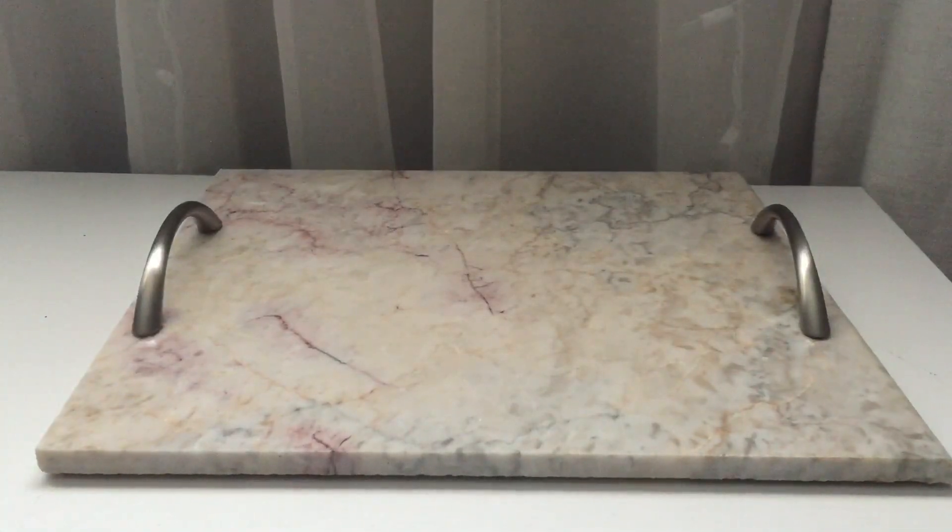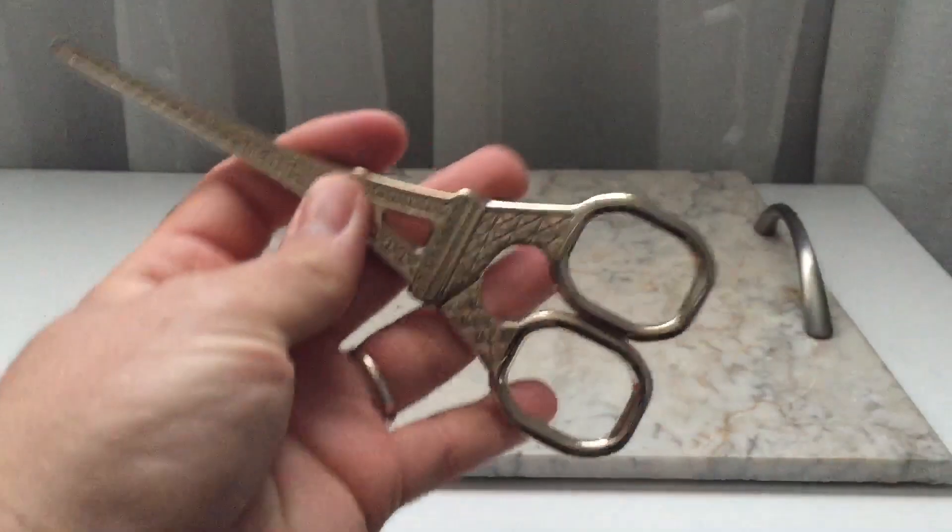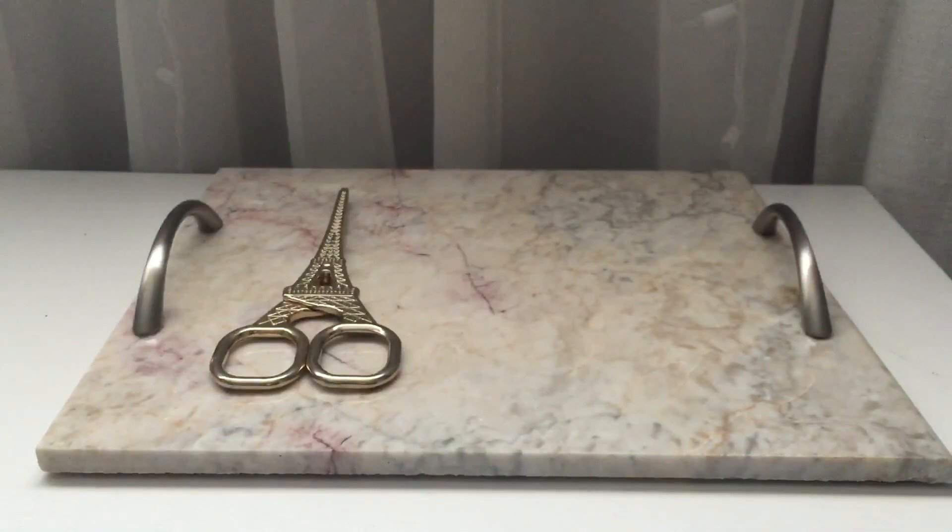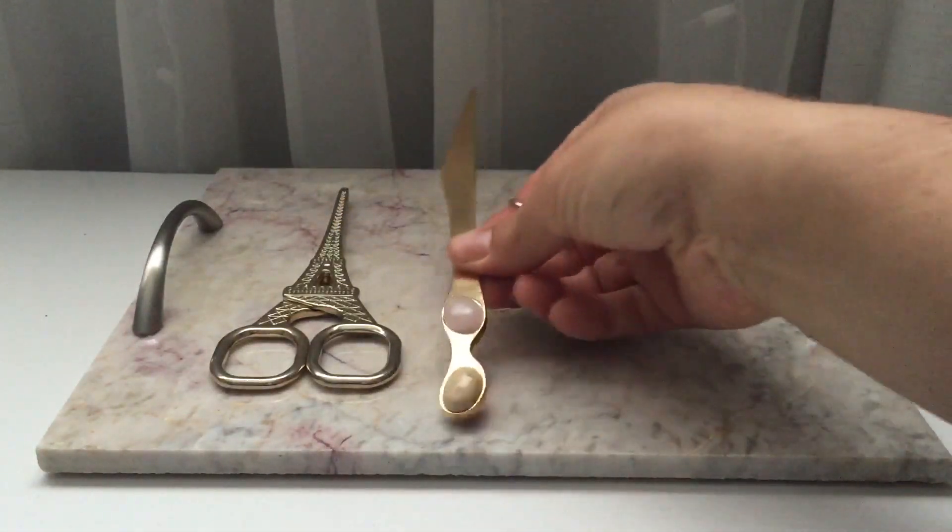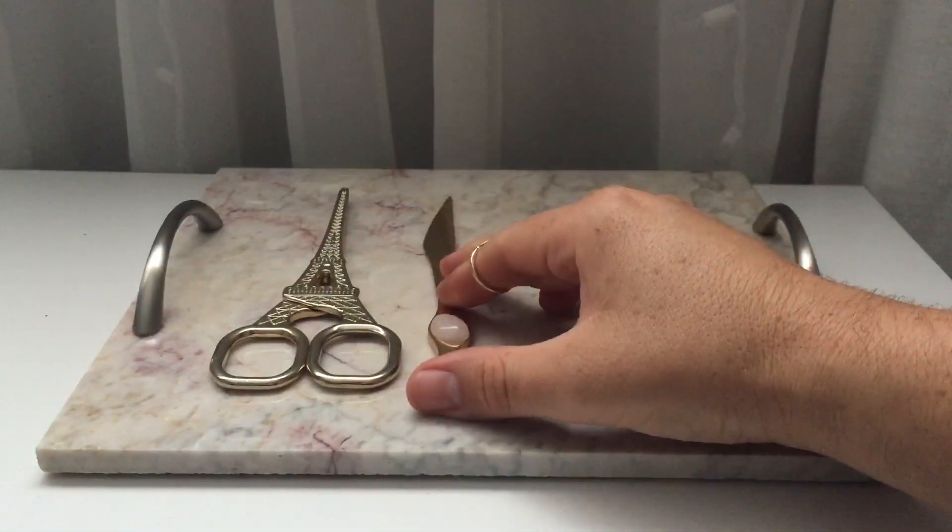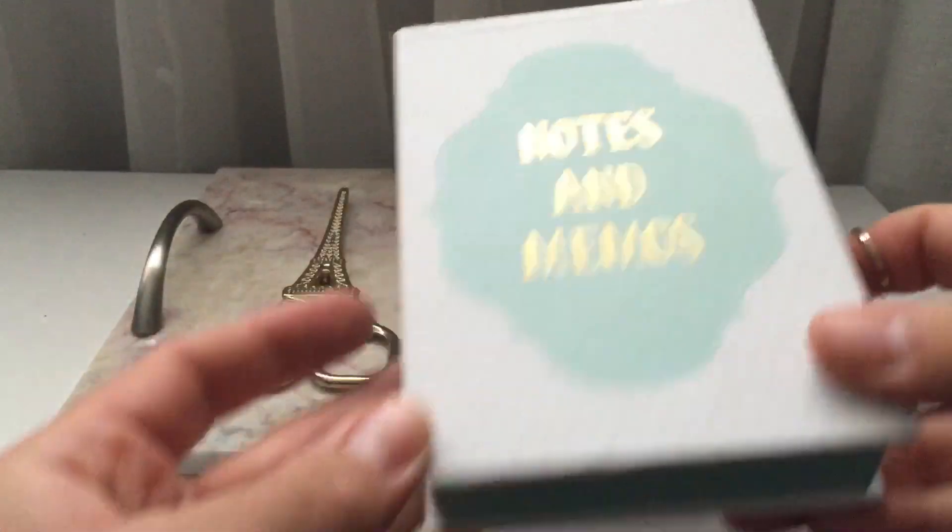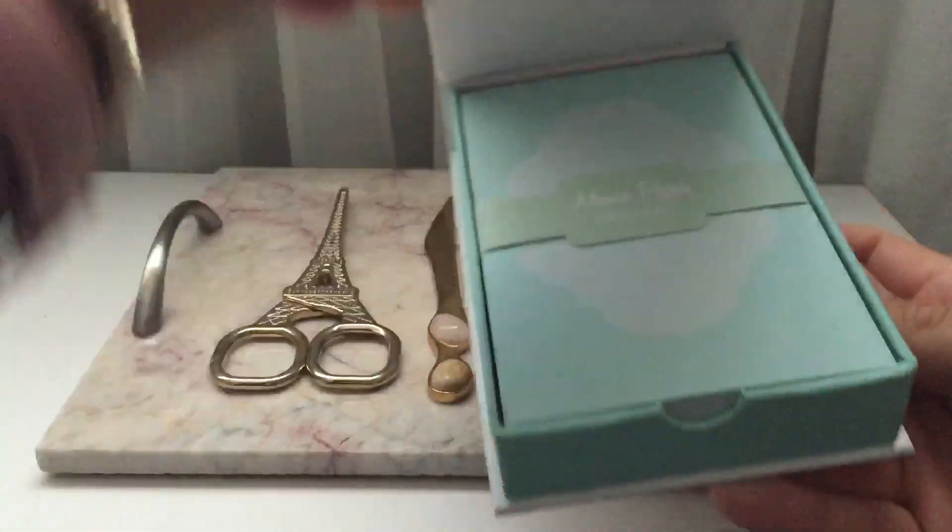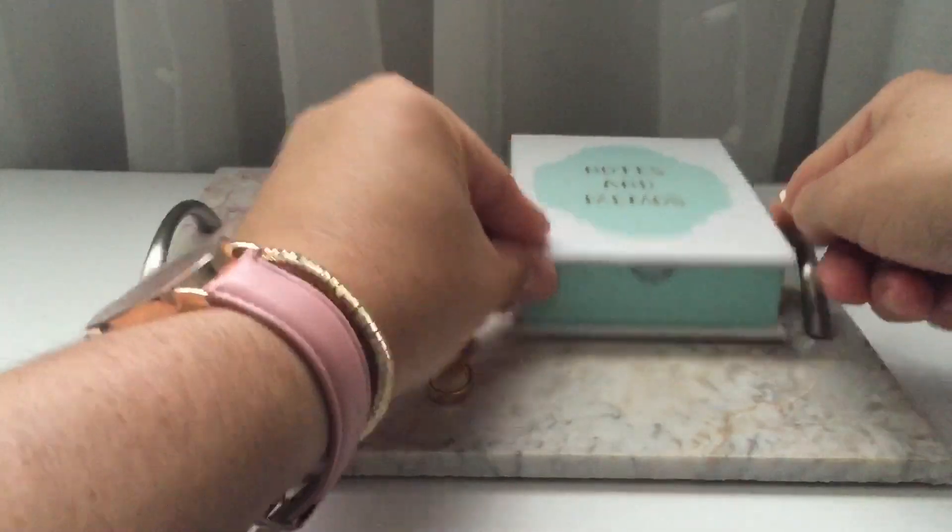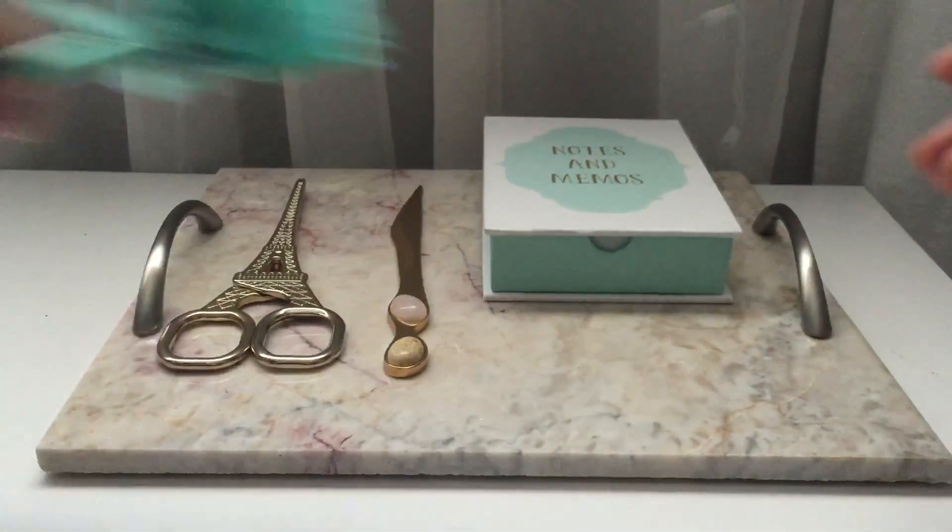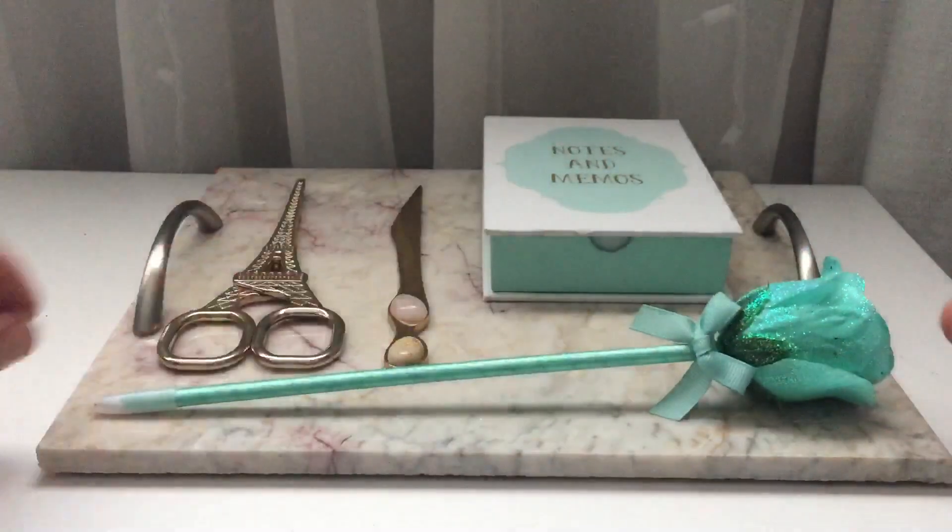All you have to do now is display your stationery items. So I'm using these Eiffel Tower scissors, and then I have a letter opener. Now, I don't have a stapler, but I would set it here as well. Then we have these notes and memos, which is so cute, so I'll be placing that here as well. And we might want to add a pen or a pencil here for looks.